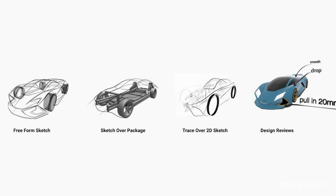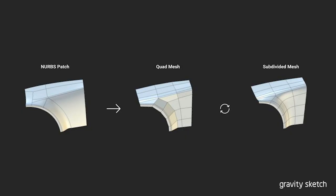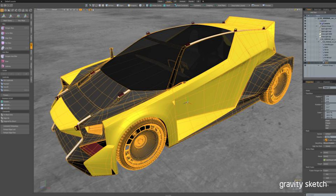There are a couple of different workflows you can use in GravitySketch: freeform sketching, sketching over package data, bringing in an image to trace, or bringing in rough CAD data for a design review. The geometry focuses on NURBS, which we convert to a quad-based mesh that you can then subdivide. You can work purely in NURBS, purely in mesh, or purely in SubD, or a combination of all of them. All the data is transferable into the CAD package — you can export as OBJ, FBX, or IGES and bring it all in.